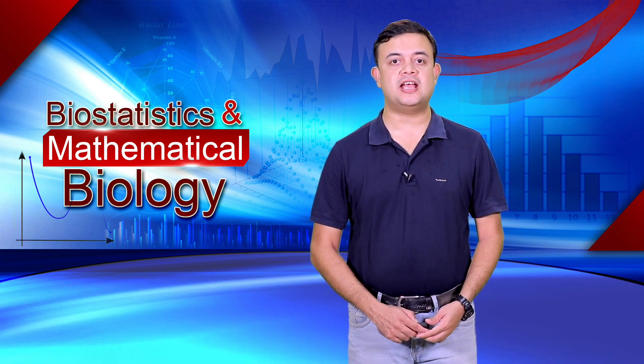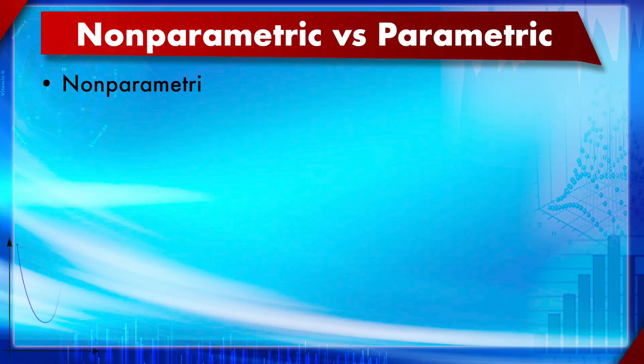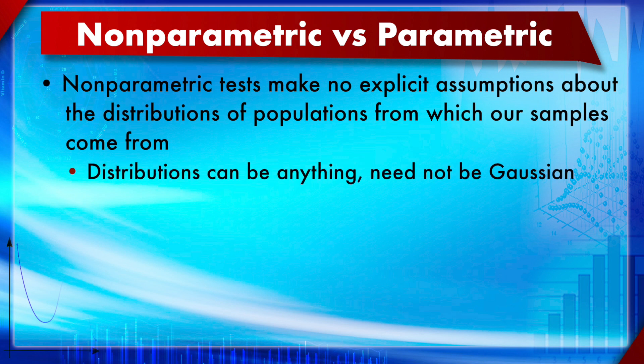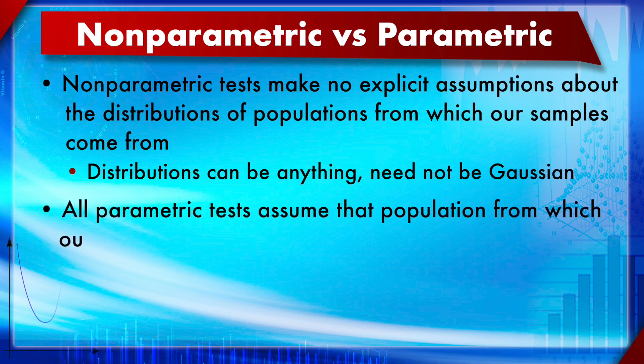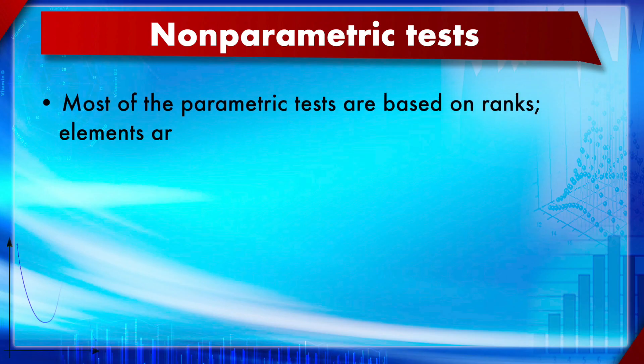Module 25: non-parametric tests, section 1 — Mann-Whitney U test and Wilcoxon matched pairs sign rank test. Non-parametric tests make no explicit assumptions about the distributions of the populations from which our samples come from, so they are distribution-independent methods. Parametric tests do assume the population is approximately Gaussian. Non-parametric methods are mostly based on ranks.